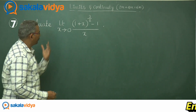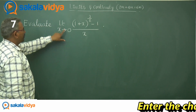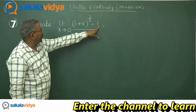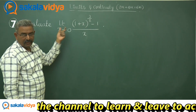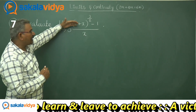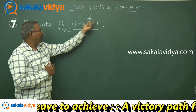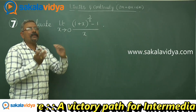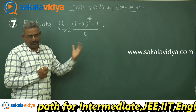Let us solve one more problem. Evaluate limit x tends to 0, (1+x)^(3/2) minus 1, divided by x. If you substitute x=0 directly, we get 0 by 0 form. That is why it has to be put in the form of x^n minus a^n divided by x minus a, which equals n times a^(n-1). That will be the standard limit so that we can solve this problem.